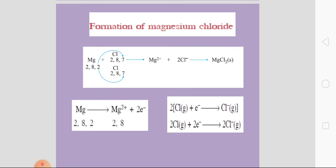Now, formation of magnesium chloride — MgCl₂ — which is also an ionic compound. Magnesium has electronic configuration 2, 8, 2. Chlorine has electronic configuration 2, 8, 7. Magnesium loses 2 electrons — one electron is accepted by each chlorine atom — forming 2 chloride ions Cl⁻ and one Mg²⁺ ion. Thus MgCl₂ is formed.